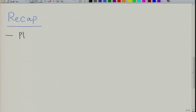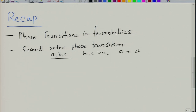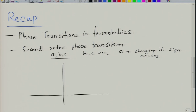In the last class, we were looking at phase transitions in ferroelectrics. We started our discussion with second order phase transition, where we found that in the free energy expression you have 3 constants A, B, C — with B and C being positive, but A changing its sign across Tc.